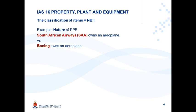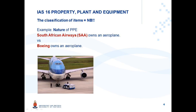South African Airways owns an airplane; Boeing also owns an airplane. In both instances the entity owns an airplane, but what's the difference? South African Airways uses this airplane to transport travelers with the purpose of generating economic benefits, whereas Boeing manufactures this airplane with the purpose of selling it to generate economic benefits. South African Airways would therefore classify this airplane as property, plant and equipment and would apply IAS 16 in accounting for it.